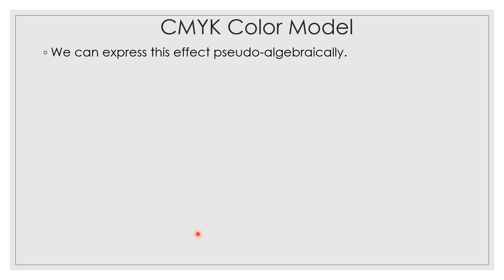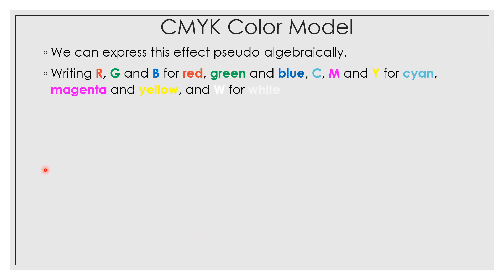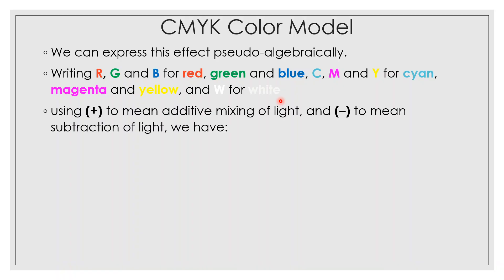We can express these effects pseudo-algebraically. Writing R, G, and B for red, green, and blue; C, M, and Y for cyan, magenta, and yellow; and W for white. Plus represents additive mixing and minus represents subtraction.